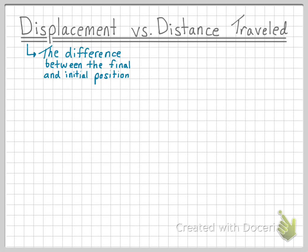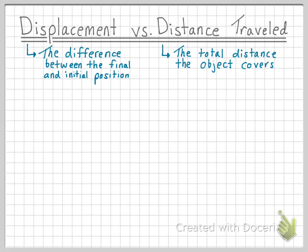Displacement, like we discussed before, is the difference between the final and initial position of an object. And distance traveled is just what it seems like — the total distance an object covers.